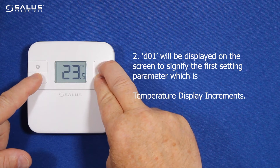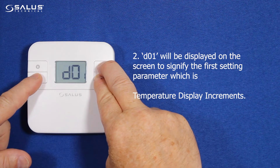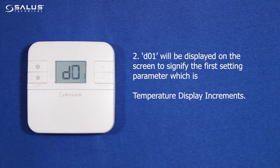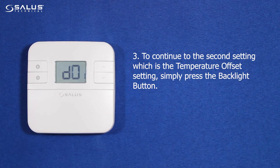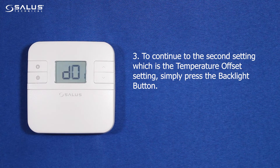Step 2: D01 will be displayed on the screen to signify the first setting parameter, which is temperature display increments. To continue to the second setting, which is the temperature offset setting, simply press the backlight button.